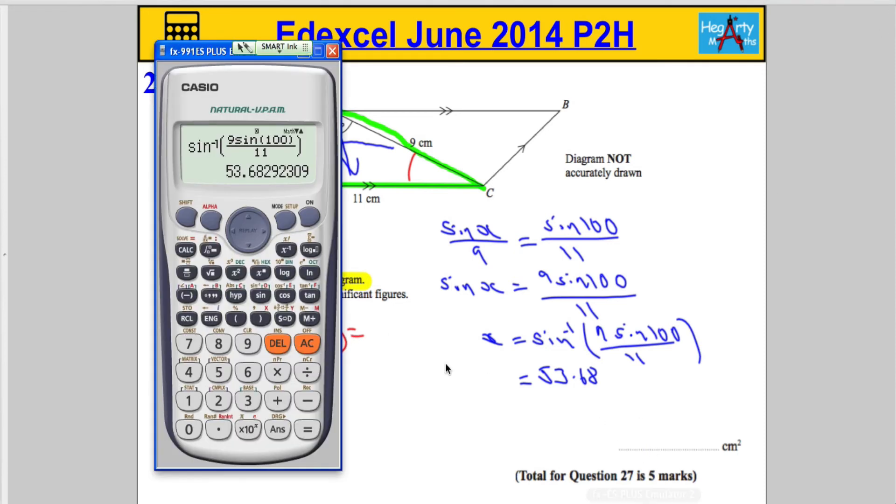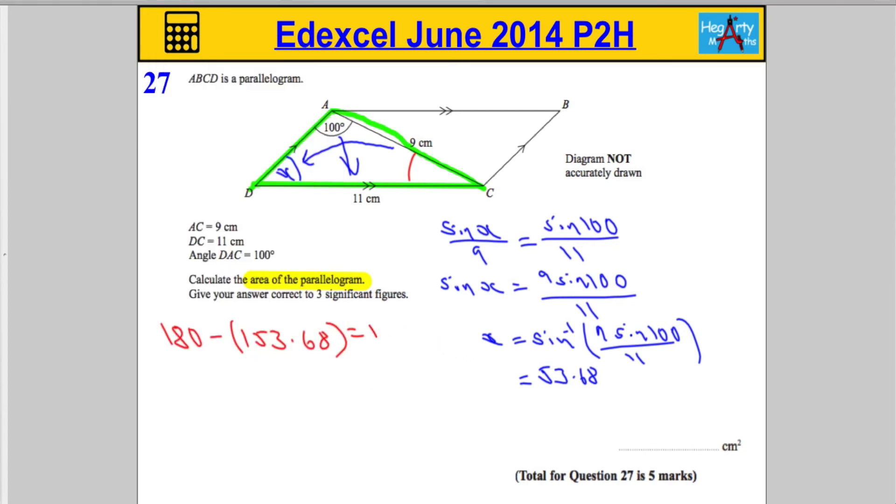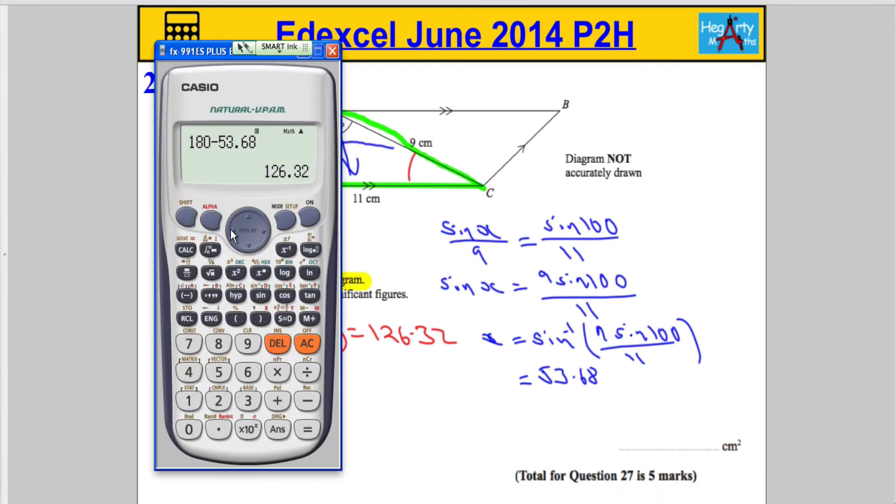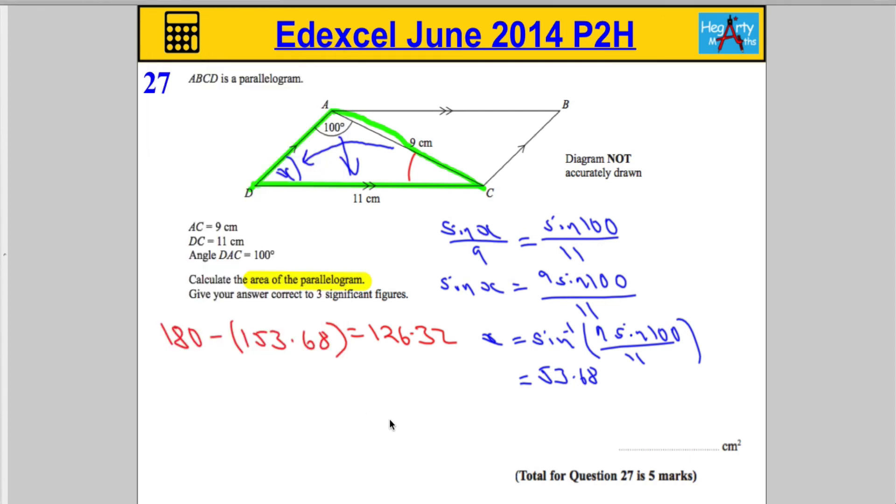So, take the calculator back, and we're going to subtract, I'm going to do 180, subtract 53.68, which is going to give us 126.32. 126.32, which is certainly wrong. Let's just check that again. Ah, very careful. It should be 153.68, and 26.32. That looks better. 26.32.